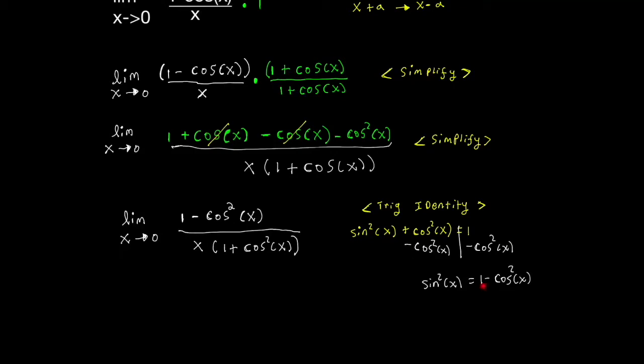This means that I can exchange my 1 minus cosine squared of x for a sine squared of x. So let's go ahead and do that.